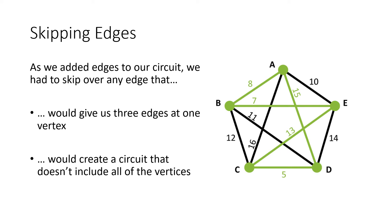So as we added edges to our circuit, let's think about the two problems we encountered. We don't want to use any edge that would give us three edges at one vertex, or that would create a circuit that doesn't include all the vertices. Those are the two things you have to watch out for as you go through this process.